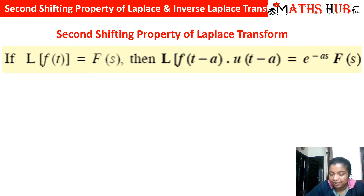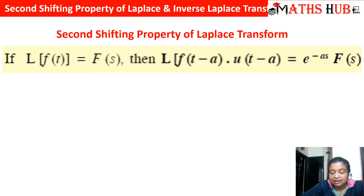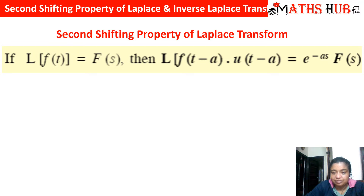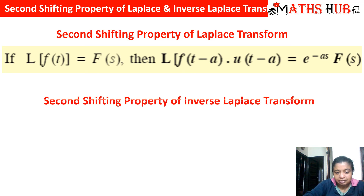In the first shifting property, if Laplace of f(t) equals F(s), then when there is a multiplication with an exponential term we shift s to s minus a. Here in the second shifting property, if the function is multiplied with the unit step function, then in the Laplace of the function we multiply by e to the power minus as.